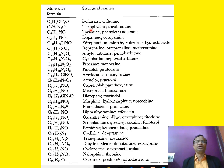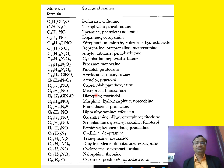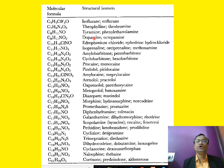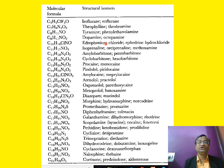Other structural isomer pairs include: isoflurane/theophylline/theobromine; isoprenaline and orciprenaline; metoprolol and butoxamine; diazepam and mesoridazine; morphine and codeine; galanthamine and retodrine; nalorphine and thebaine; cortisone and prednisone. Dopamine-related compounds, edrophonium and ephedrine are also examples — edrophonium and ephedrine are totally different despite being structural isomers. Glycopyrrolate and atropine are also related isomers.